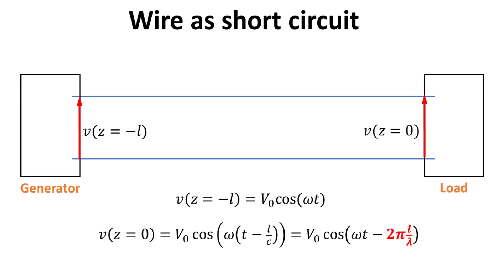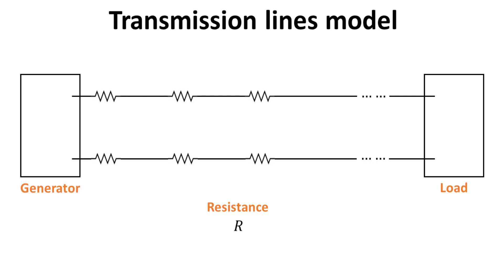However, if we are in the opposite limit, then this phase shift should be accounted for, and the simple model of a wire as a short circuit would not be accurate. Hence, there is a need for a more physical model when the wire is comparable to or longer than the wavelength. We shall present the transmission line model, which can be viewed as a general physical model of a pair of wires.